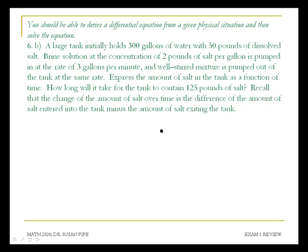This is our last problem on our review. Here we have a tank problem. The tank initially holds 300 gallons of water with 50 pounds of dissolved salt. I'm going to let the amount of salt in the tank be represented by the function A of T, where A is the amount of salt in the tank at time T. So here I have 50 pounds of salt initially, A of 0 is equal to 50.